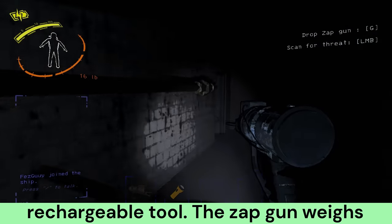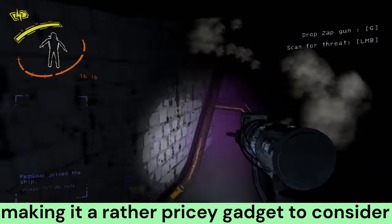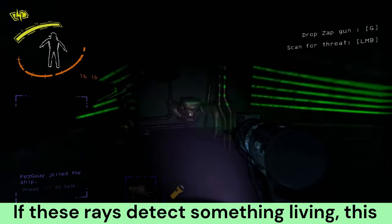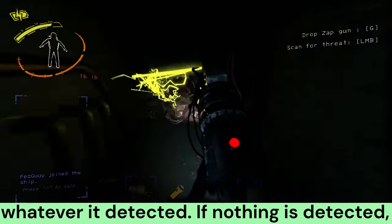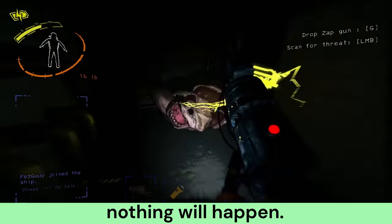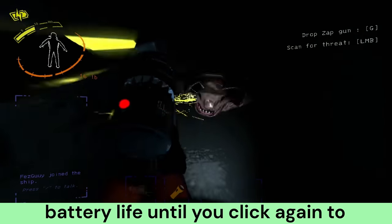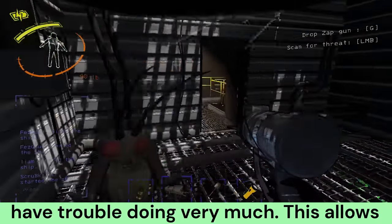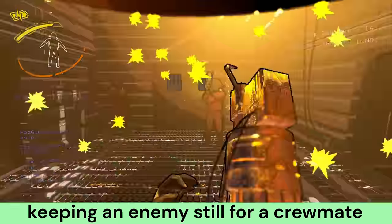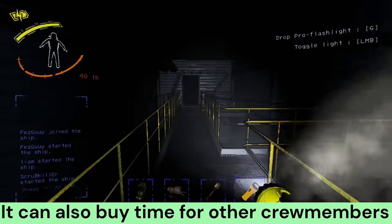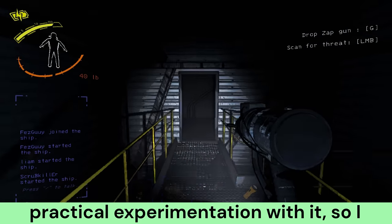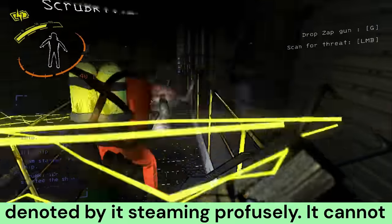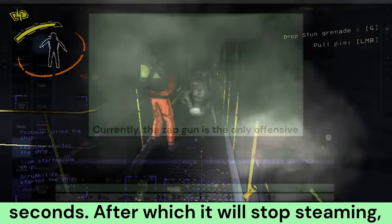Currently, the zapgun is the only offensive rechargeable tool. The zapgun weighs 11 pounds and can be purchased for $400. When you activate the zapgun, it will send out some scanning rays ahead of you. If these rays detect something living, it will cause the zapgun to lock onto whatever it detected. Once the zapgun is locked on, it will send out an arc of electricity until you click again to deactivate it. When a being is being affected by the zapgun's arc, it will slow down greatly and have trouble doing very much.